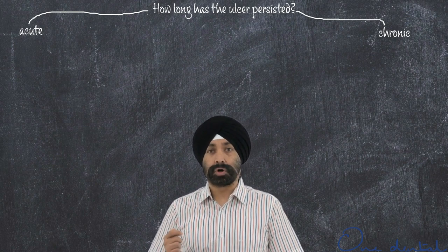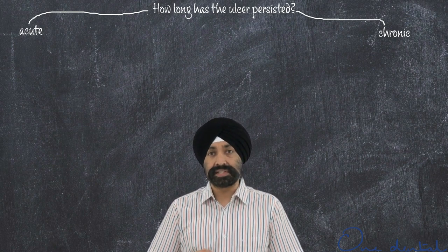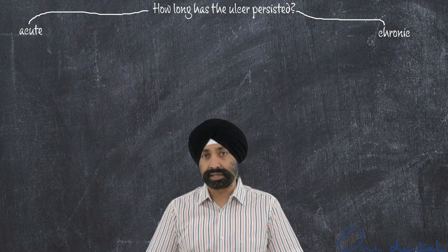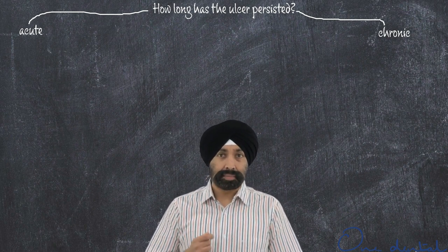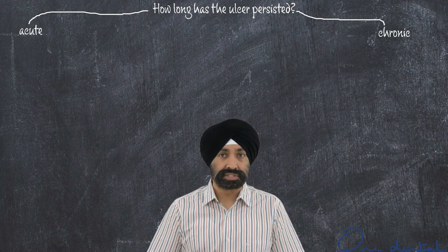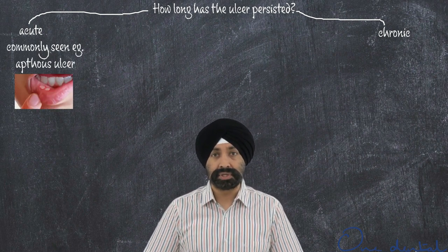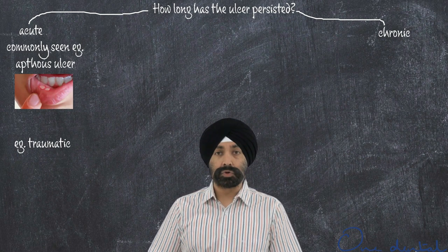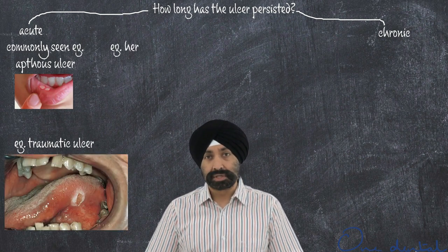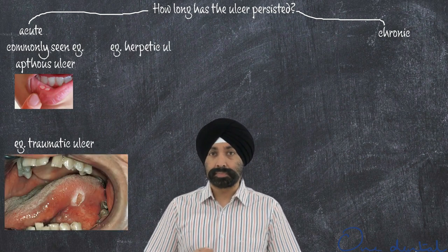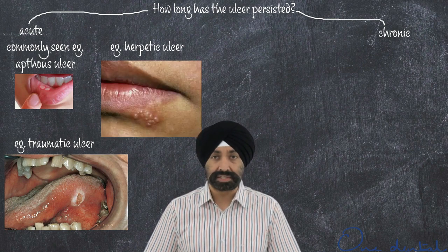Many commonly seen ulcers which we see in our day-to-day clinical practices at our clinics happen to be acute ulcers of the types of aphthous ulcer. It could be a traumatic ulcer, or it could be an ulcer which is associated with herpes — that could be the primary herpetic gingivostomatitis or the recurrent herpes labialis.